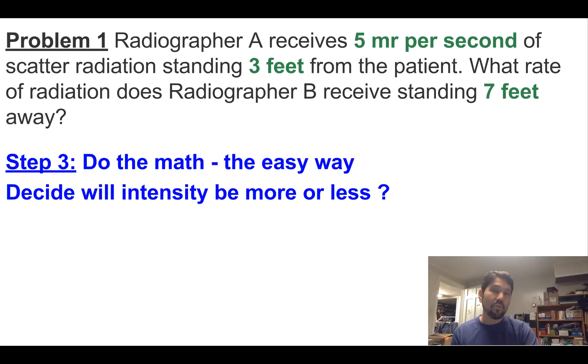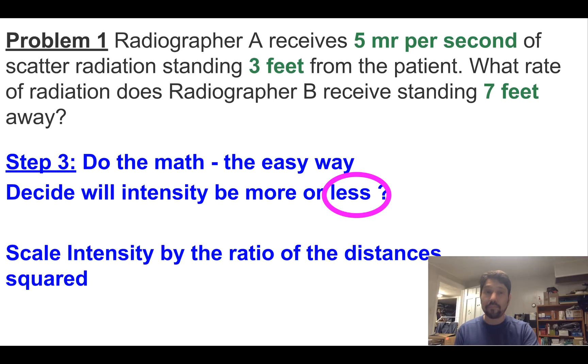All right, decide what intensity, the new intensity, is that going to be more or less than the old intensity? The old intensity of five is measured at three feet. Now when you back up to seven feet, you're stepping away from the campfire, you're going to feel less heat. It's going to be less intense. So it's going to be less. You're further away. All right, now we're going to just scale the intensity by the ratio of the distances squared.